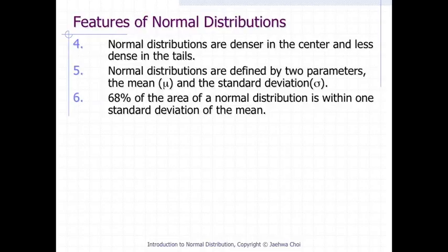Normal distributions are denser in the center and less dense in the tails. Normal distributions are defined by two parameters, the mean and the standard deviation. 68% of the area of a normal distribution is within one standard deviation of the mean.